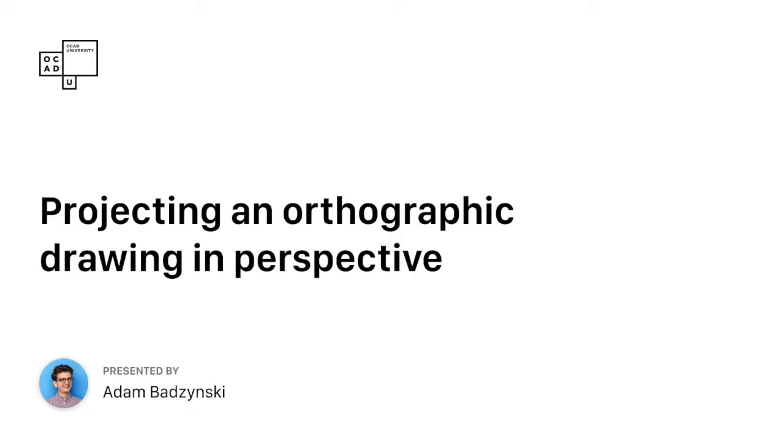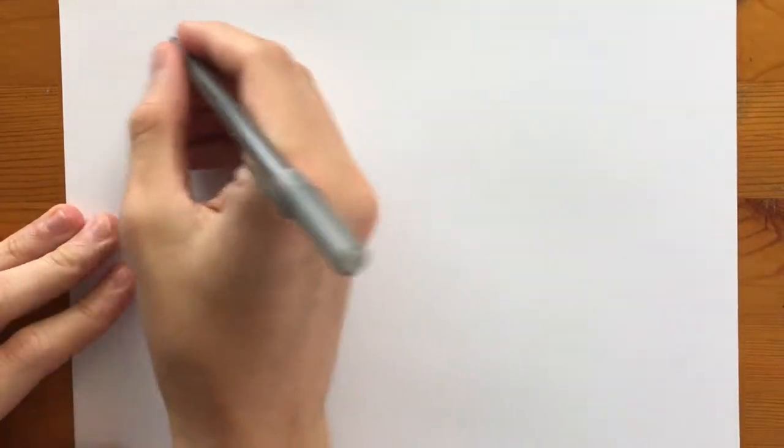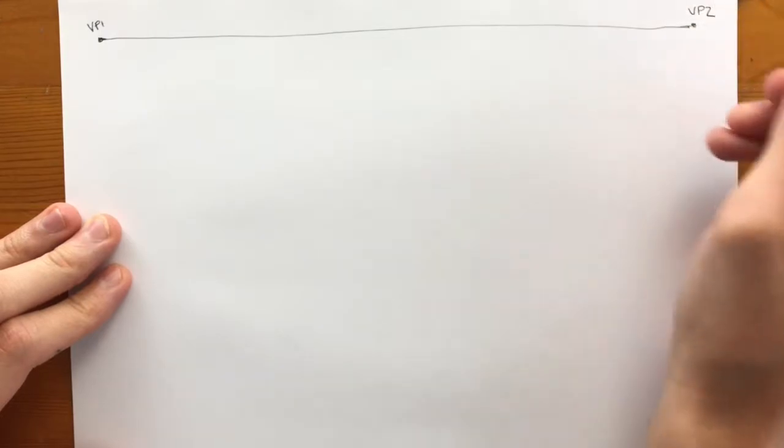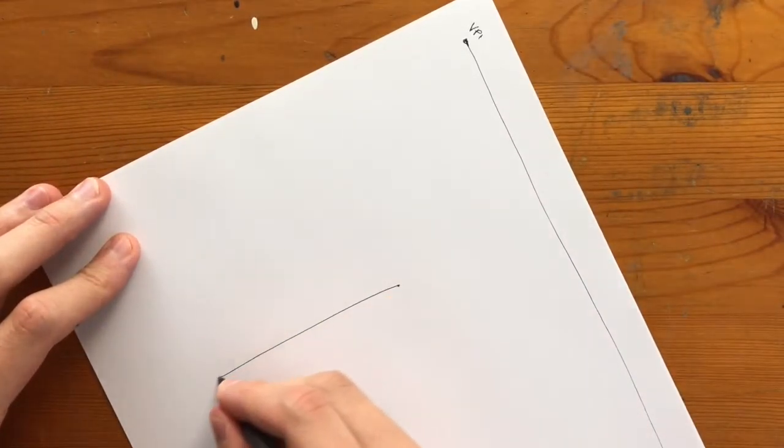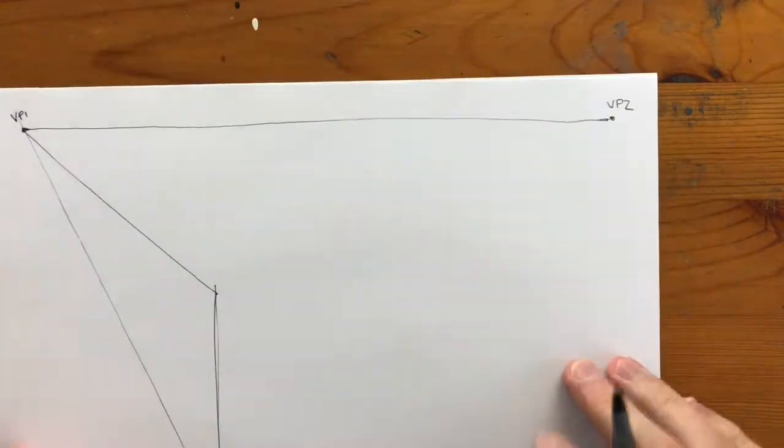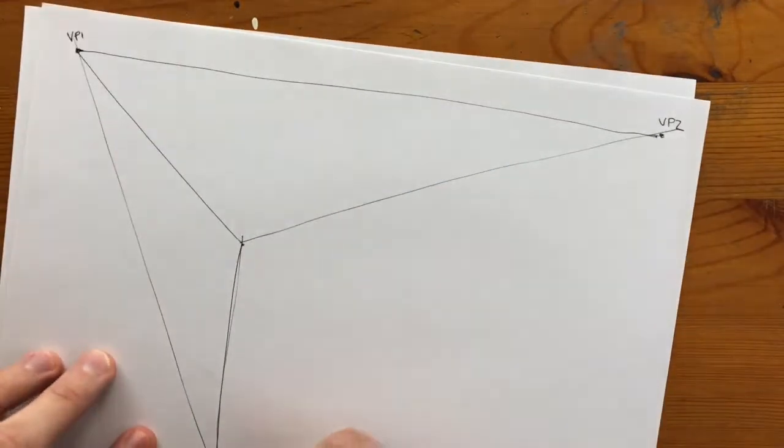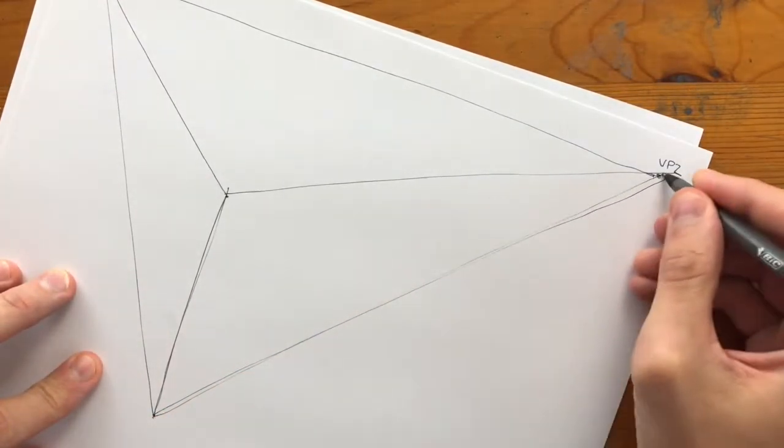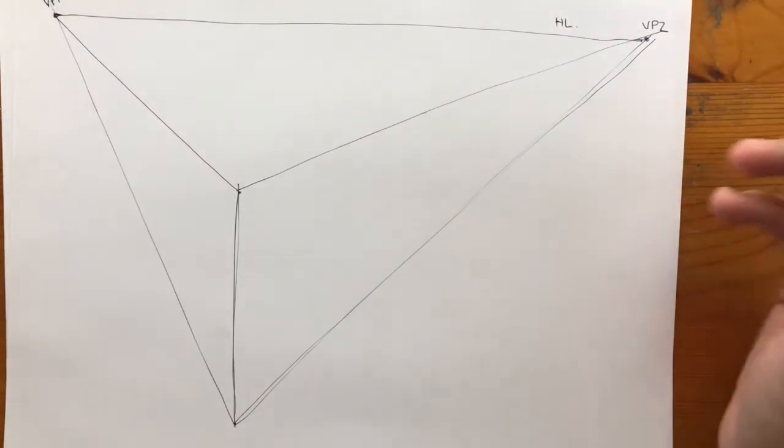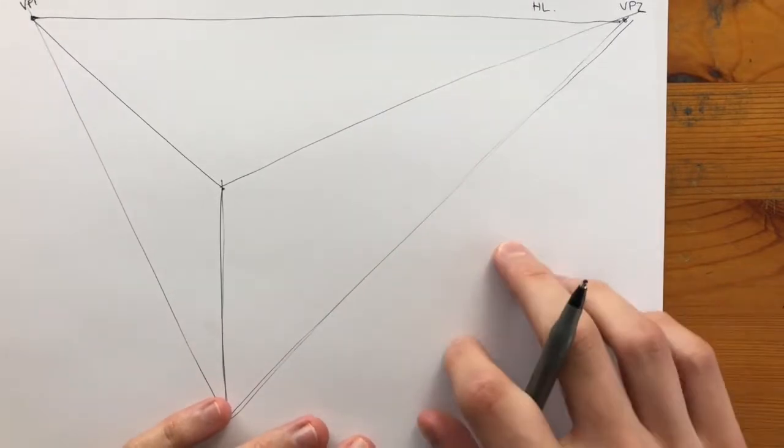Orthographic sketches are a great way to explore different design directions. In this video, I'm going to show you how you can take an orthographic drawing and project it in a two-point perspective. First, let's start by establishing our two-point perspective. Okay, so we've got a perspective established with the horizon line and two vanishing points. Now let's draw a 2D grid with our orthographic drawing in this corner here.